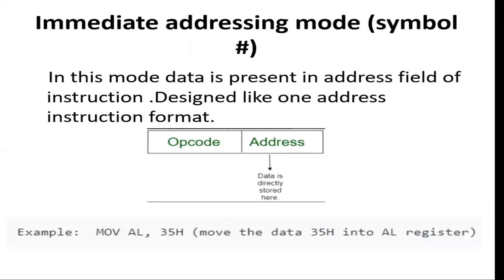Next is immediate addressing mode. In immediate addressing mode, the operand — the data on which we have to perform the operation — is available in the instruction itself. For example, we have 'MOV AL, 35H.' We have to move the data 35H (H stands for hexadecimal) into the AL register. So the operand 35 is in hexadecimal form. Immediate addressing provides us the operand directly in the instruction.